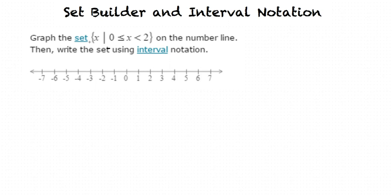Consider this example. Is this set builder notation? Yes, this is what we call set builder notation. It shows the inequality with the variable x. Interval notation will not have the variables in it, only number values. This is how we say our set: 0 is less than or equal to x, which is less than 2.